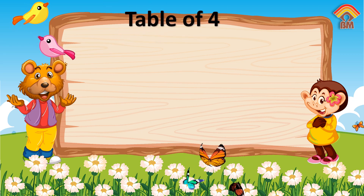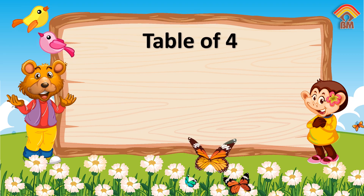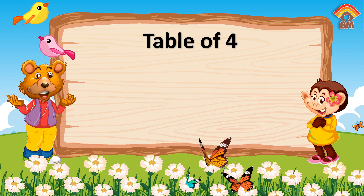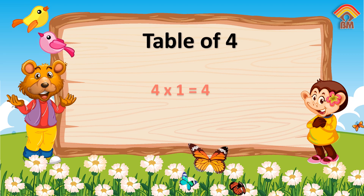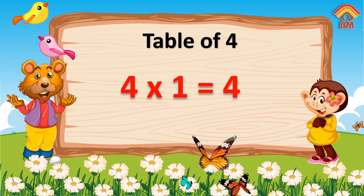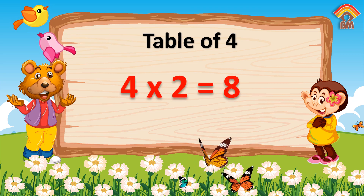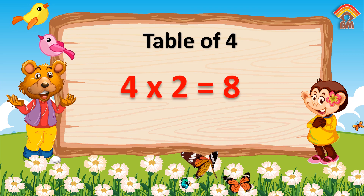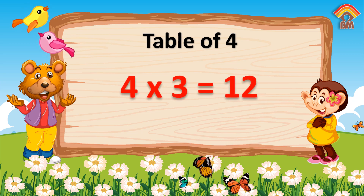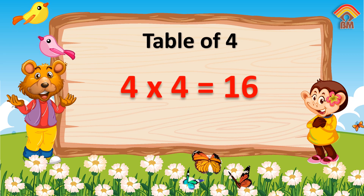Table of Four. Four ones are four. Four twos are eight. Four threes are twelve. Four fours are sixteen.